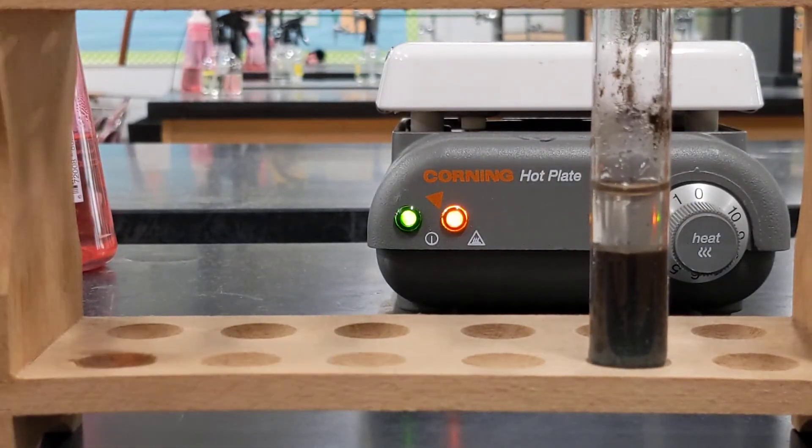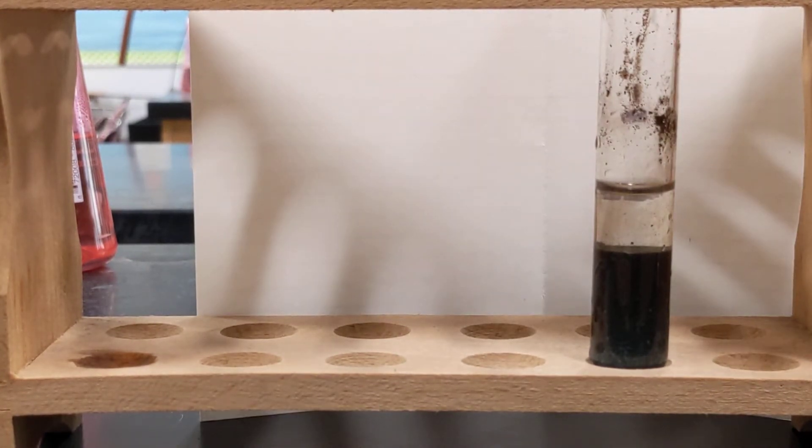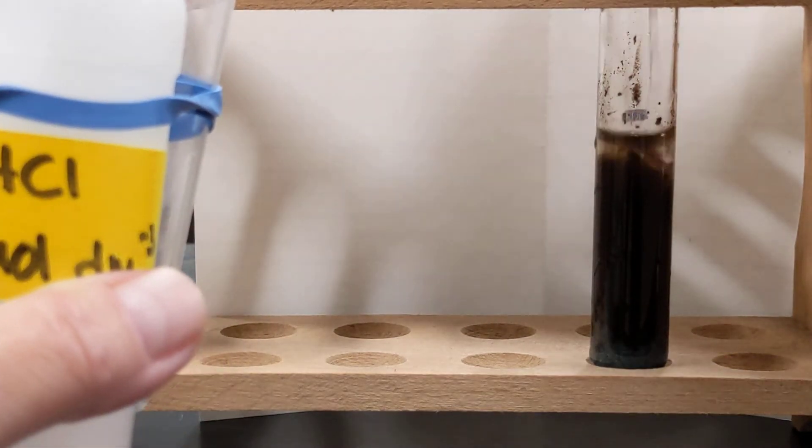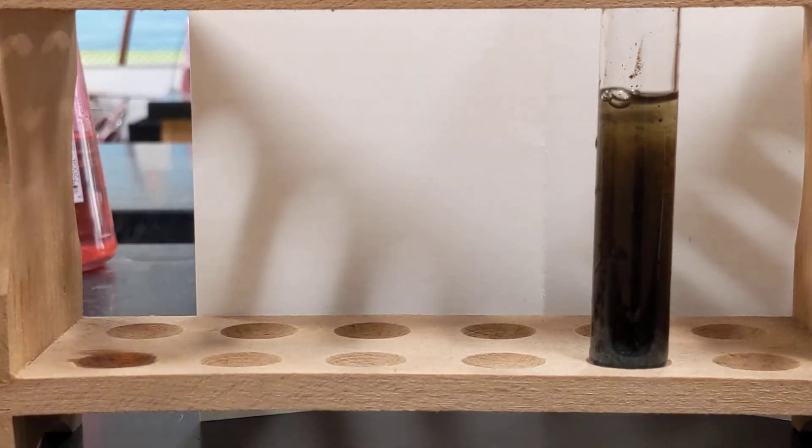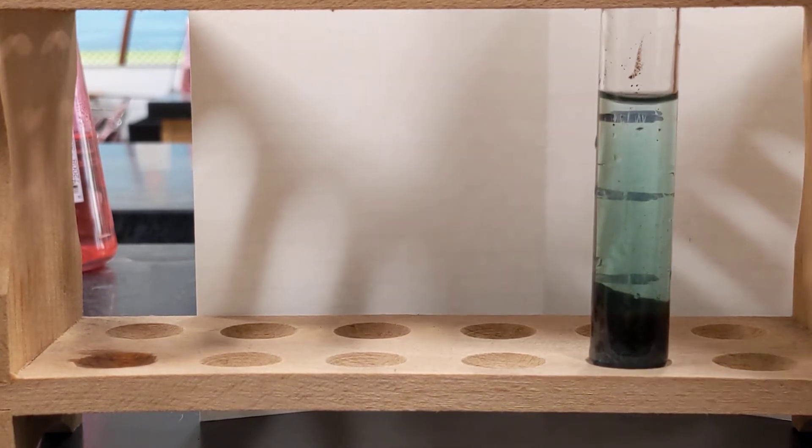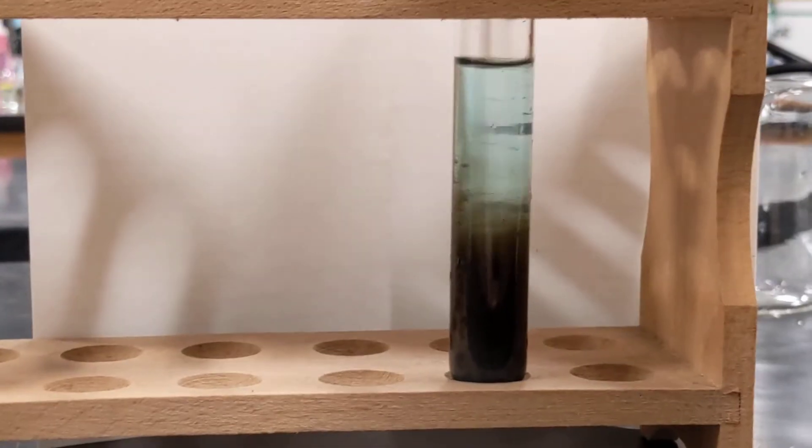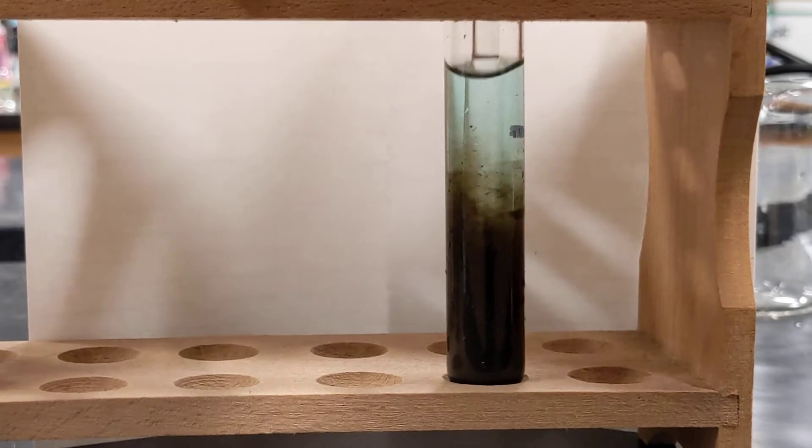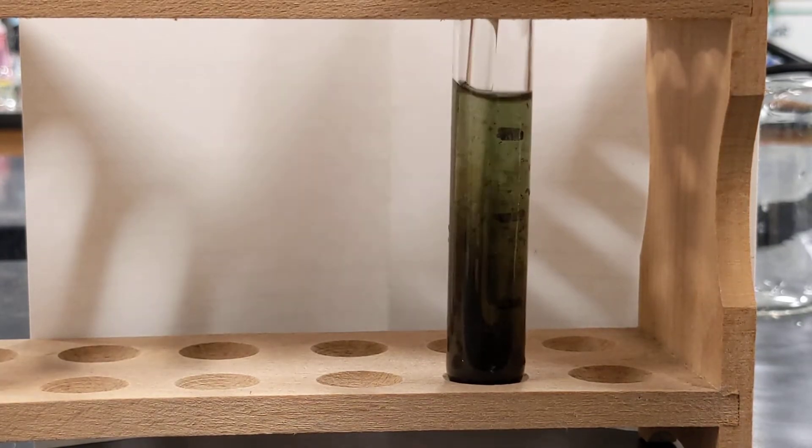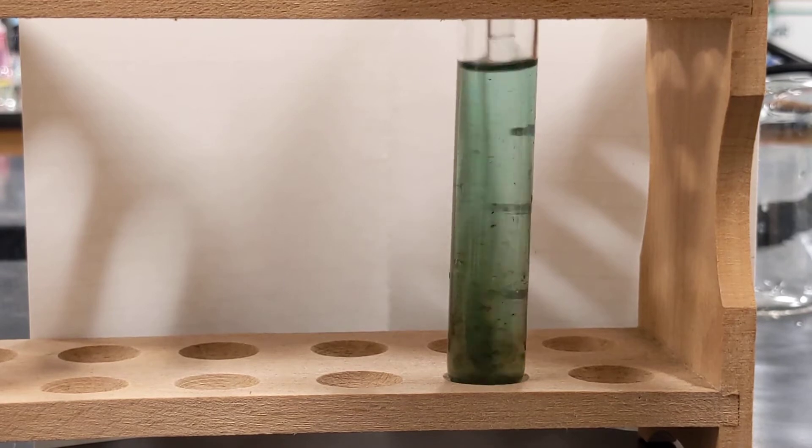All right, so continuing on, we want to do the next step, which is add some hydrochloric acid to the tube. So there's my hydrochloric acid, and oh, it looks like it's starting to clear up in there a little bit. Let me stir, and I'm definitely starting to clear up a little bit, and I'm also seeing a little blue color return and just a few specks of black.